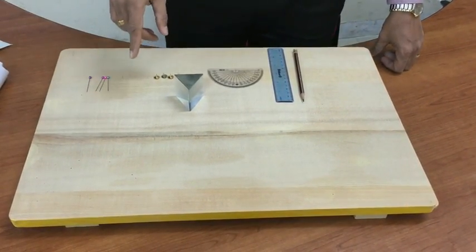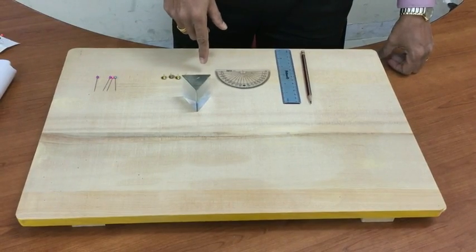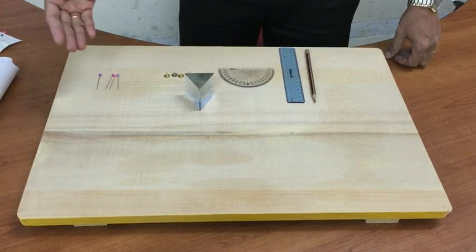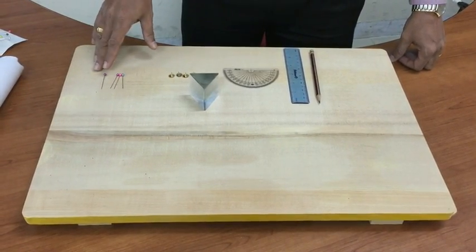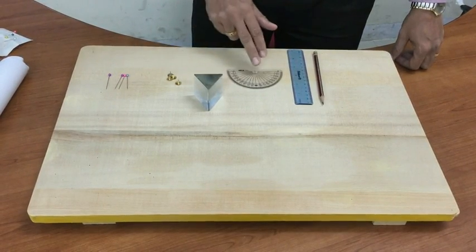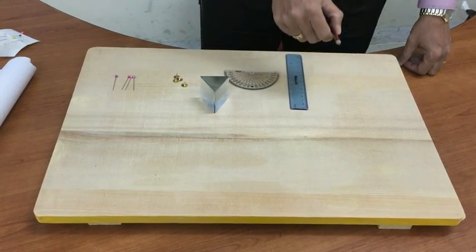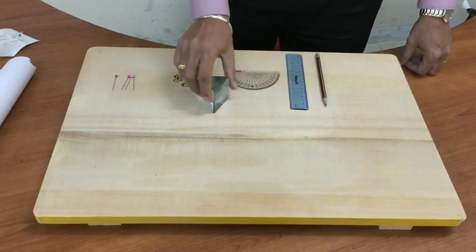This is an experiment related to tracing the path of refracted light through a glass prism. The apparatus needed are pins, bell pins, a protractor, scale, a very sharp pencil, and a prism.